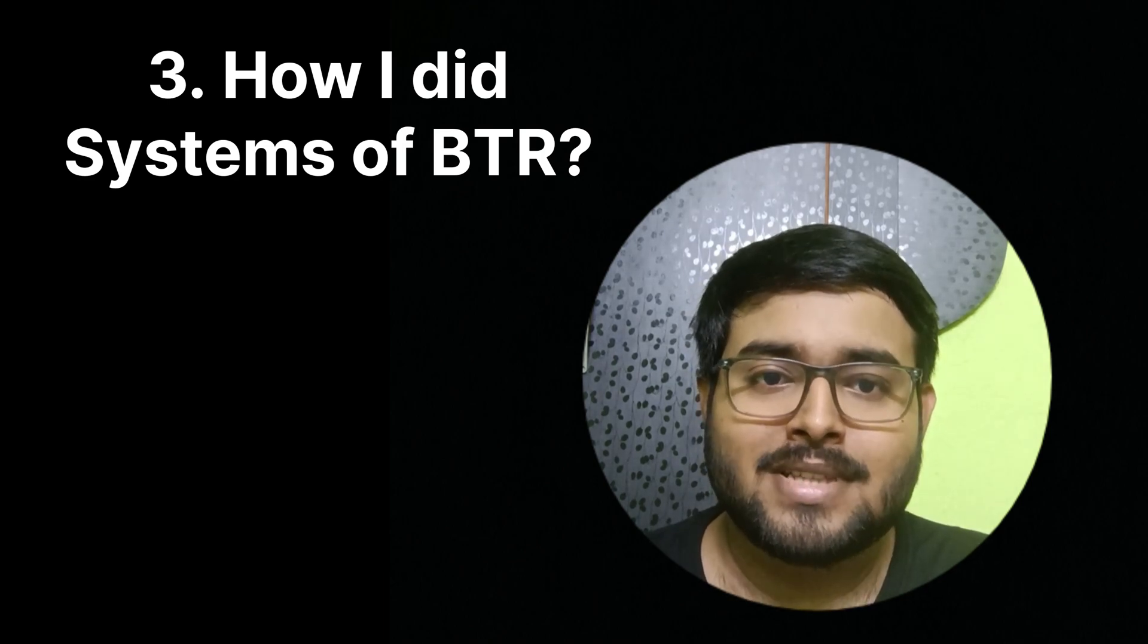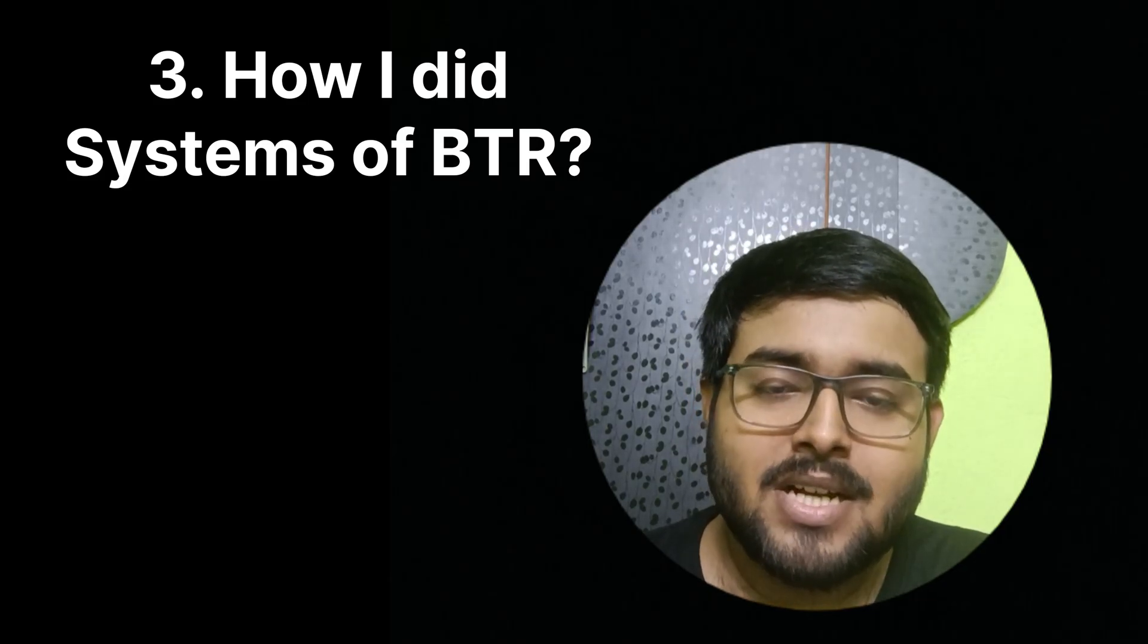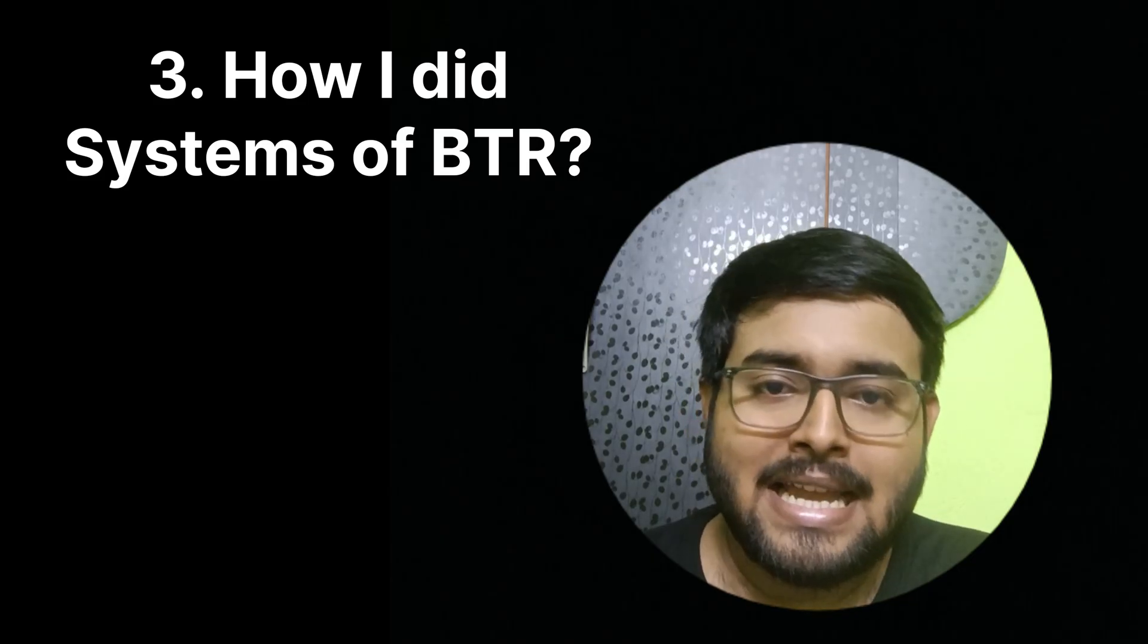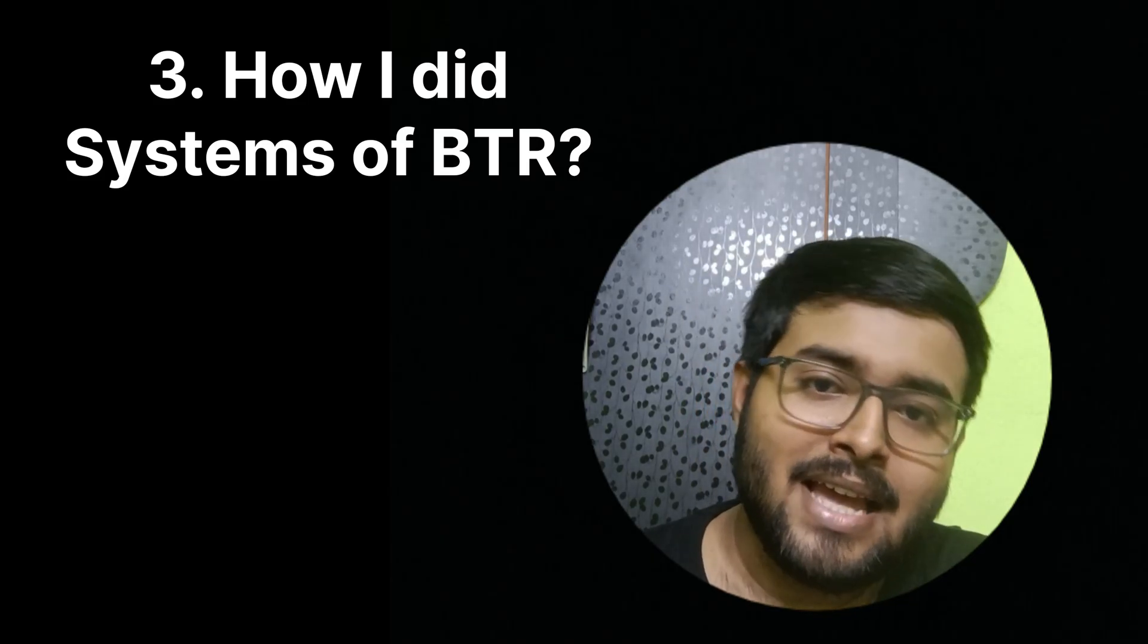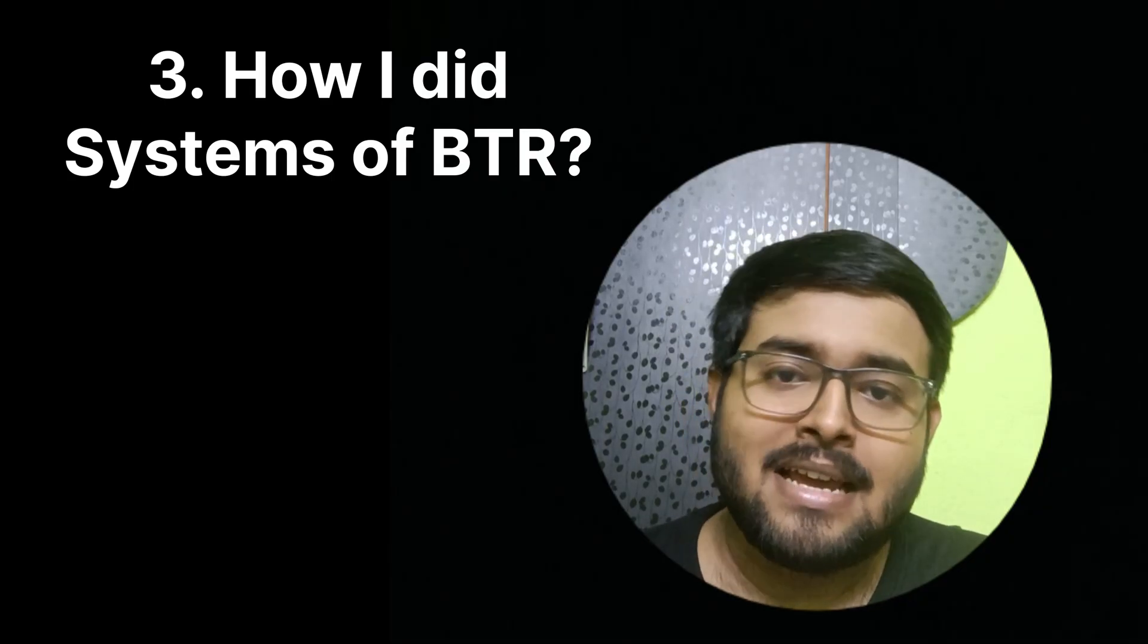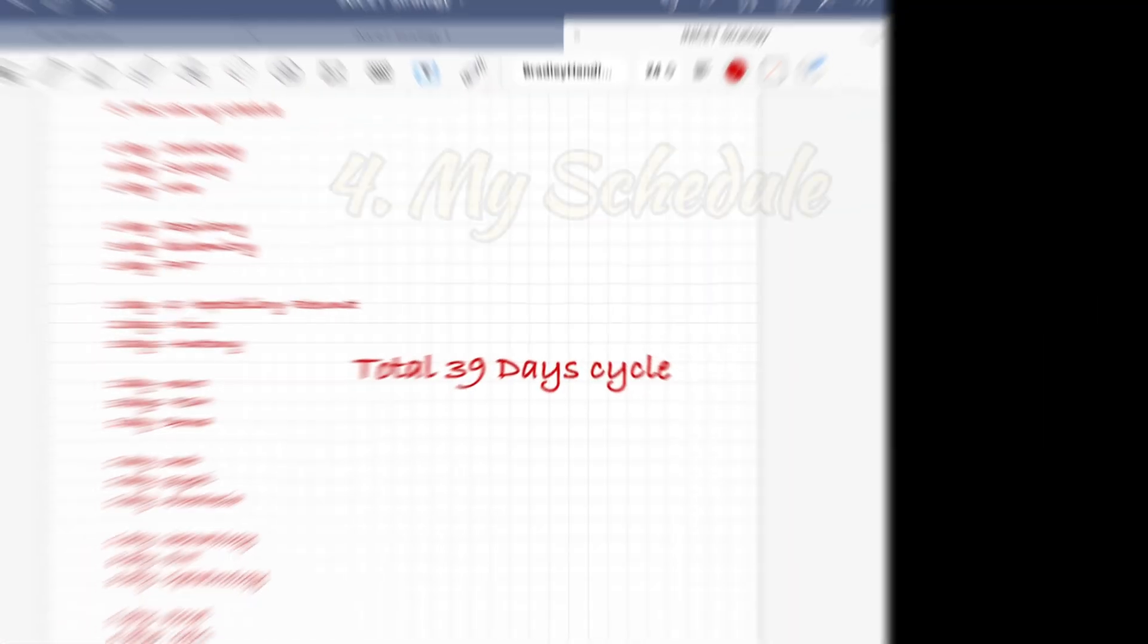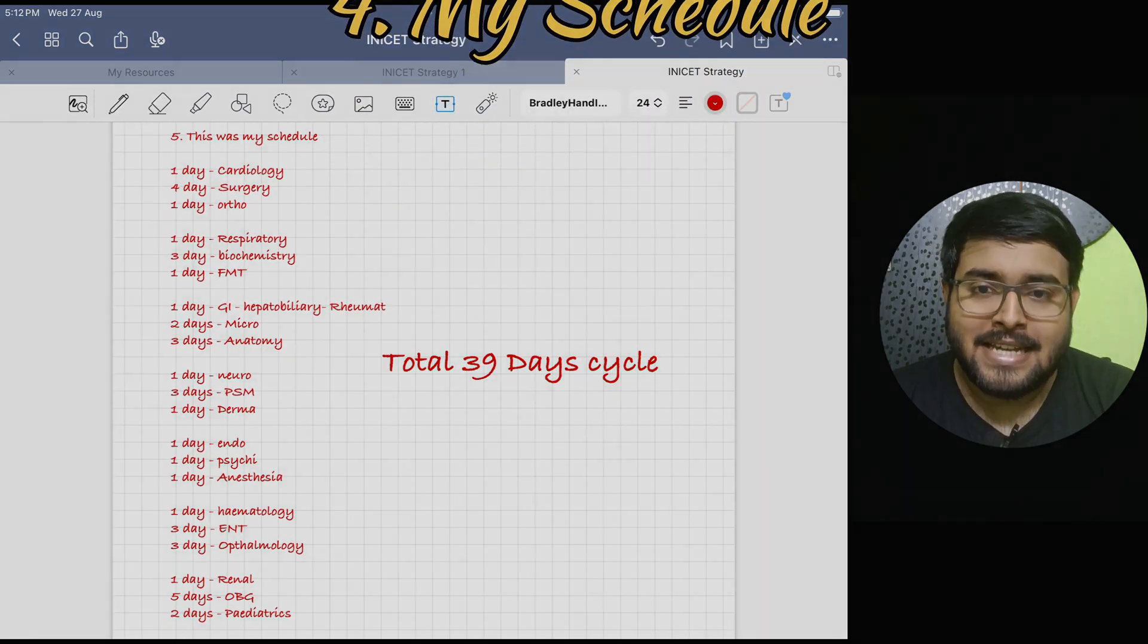I didn't read FastEd, but it was difficult for me to do entire eight systems at a stretch. I started with one system - cardio, then I did surgery and ortho. After that, I read respiratory system, then I read biochemistry, FMT, and so on. This was the schedule which I followed. You can pause the video and take a screenshot.